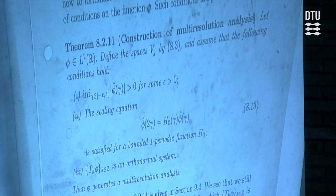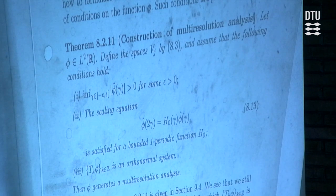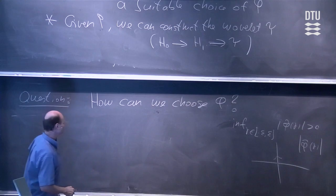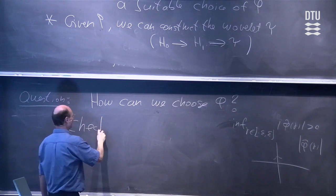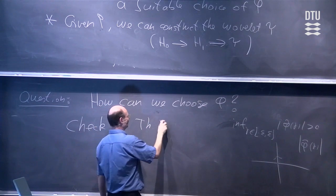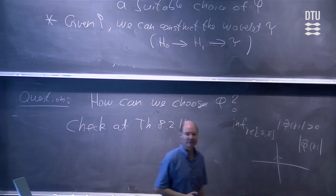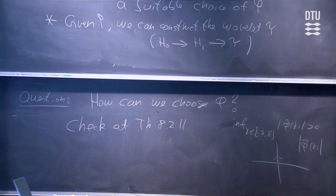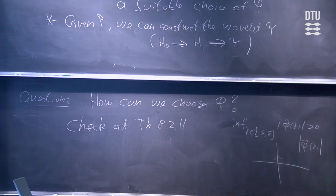So if all these conditions are satisfied, then we know that the function φ will generate a multiresolution analysis. That means we are here and we can construct the wavelet by this procedure — the answer is we look at theorem 8.11. Now, instead of going more into detail with that, I will speak a little bit about applications of wavelets. We will not be able to finish today because there are some mathematical steps we need to take before we can reach the actual applications, but I will take all the mathematical steps needed so that at the beginning of the next lecture you can see how wavelets can be applied.